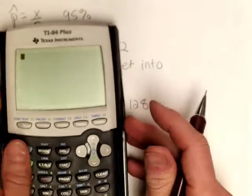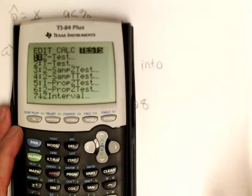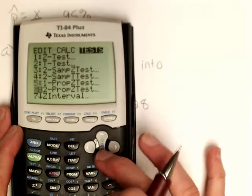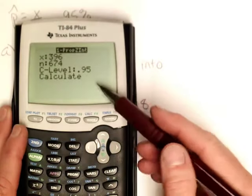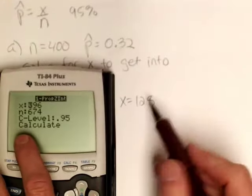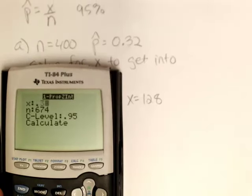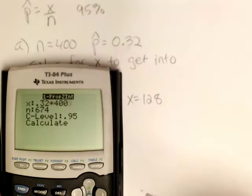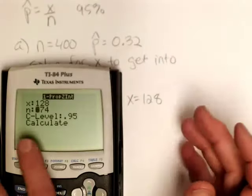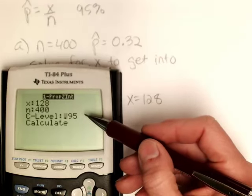So now going to my calculator, I want to go to my stat menu, right arrow over to tests, and scroll down to one proportion z interval. And then I want to put in the information. I just calculated x. What's really cool is if you wanted to, you could go ahead and put in 0.32 times 400 right there, and it'll do the calculation within the function, or you could have just put in 128. My sample size is 400, and my level of confidence is 0.95.